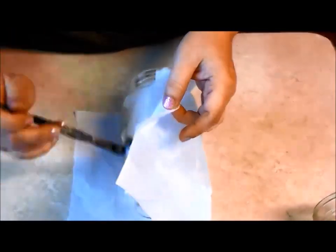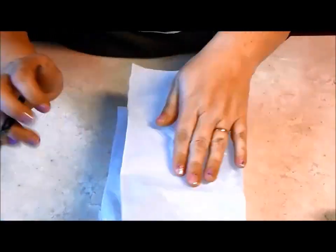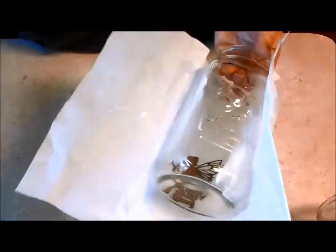Apply a layer of white glue to the outside of the clean glass jar. Place a layer of tissue paper on top and smooth it out. Continue around the jar, working in sections until it is covered.